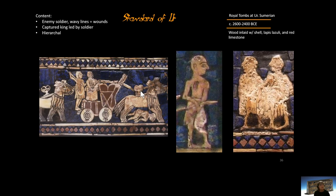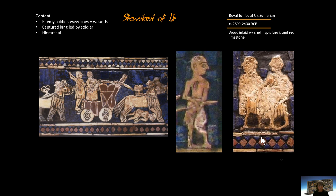In a close-up of the bottom register, you can see the horse and a person falling underneath it. This is a captured enemy soldier, and the wavy lines indicate wounds on that soldier. His hands are tied. A close-up of the king shows a rope — it's a bit destroyed here so it's unclear if it goes around his neck. Close-ups also show the red limestone and the blue lapis lazuli. The piece is pushed into bitumen — like tar — which is what holds the whole piece together. That black background behind the figures is the bitumen.